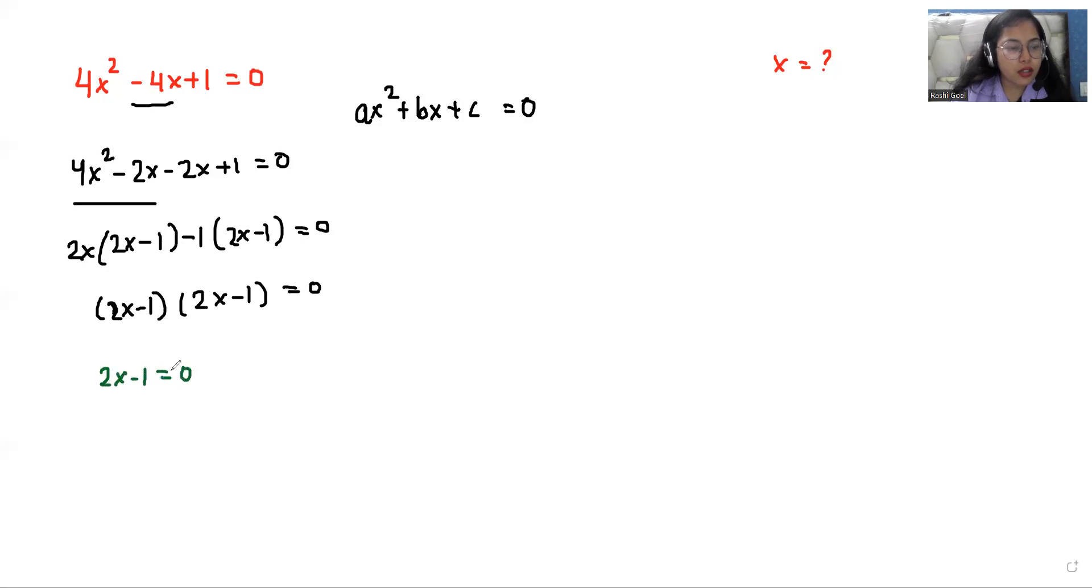So 2x - 1 = 0, and the next one again, 2x - 1 = 0. So 2x equals—the minus 1 goes to the other side—plus 1, and x = 1/2. So the 2 goes to the other side and converts from multiplication to division.